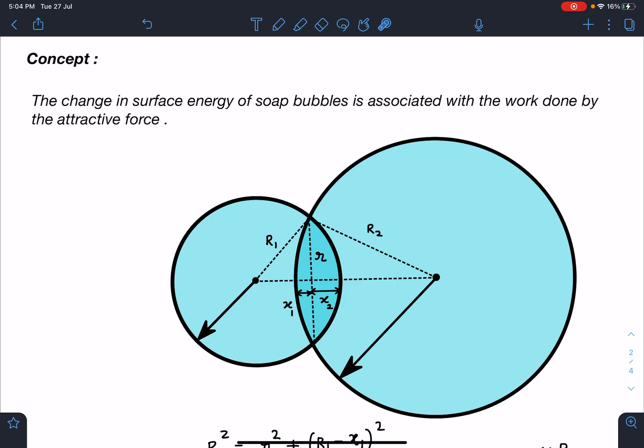Let's say at the initial instant when this merging process starts, this is the common interface now, and x1 and x2 are very small distances. At the initial moment, they are almost close to zero, so R1 is very very large compared to x1, and even R2 is very very large compared to x2.